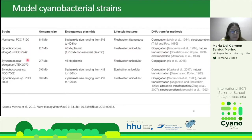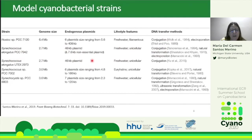A closely related species discovered recently in 2015, Synechococcus elongatus UTEX 2973, is quite similar to 7942. In fact, the genome is the same size and contains only one plasmid. The difference between these two species is a small number of single nucleotide polymorphisms that allow this strain to grow faster.